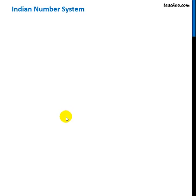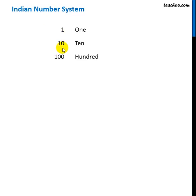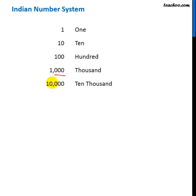Let's look at how to write numbers in the Indian number system. We write 1, 10, 100, 1000 — 1000 has 3 zeros. Now 4 zeros will be 10,000, so it has 10 and then 3 zeros making 1000, giving us 10,000.